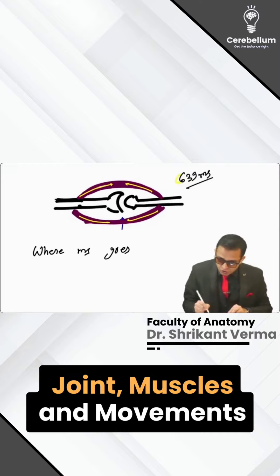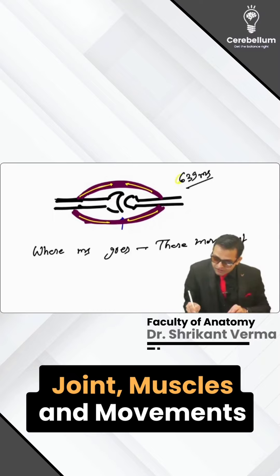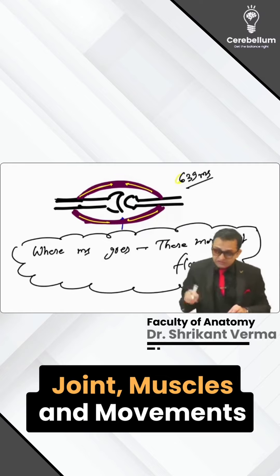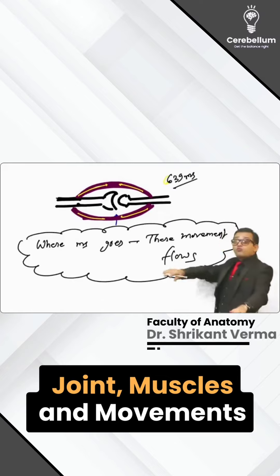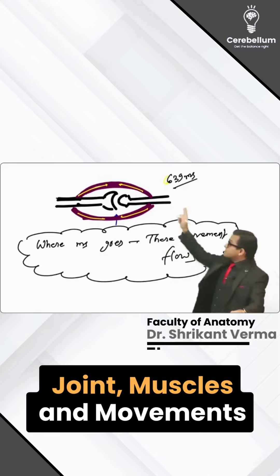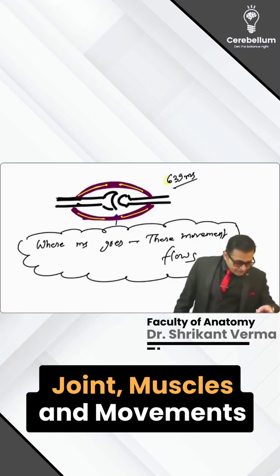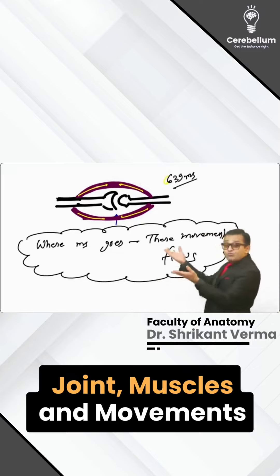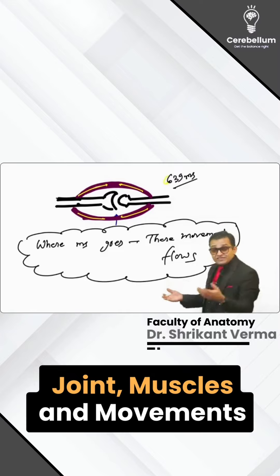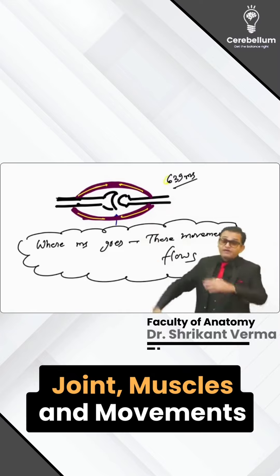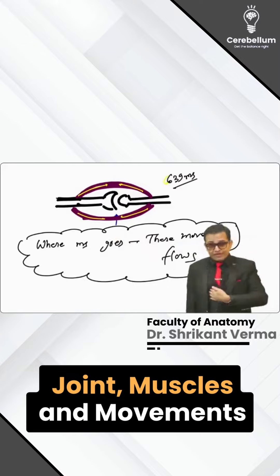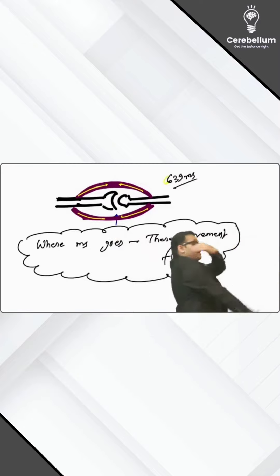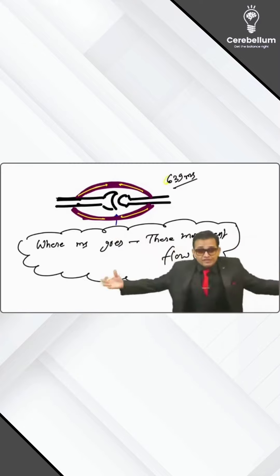So the mnemonic is: where muscle goes, there movement flows. We do not need to mug up every muscle and every action — this is the magic of the 639. In Hindi: jidhar muscle, udhar movement. Lateral muscle — lateral movement; medial muscle — medial movement; front muscle — front movement; back muscle — back movement.